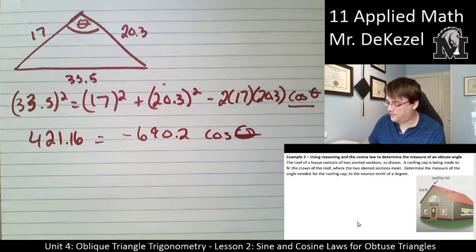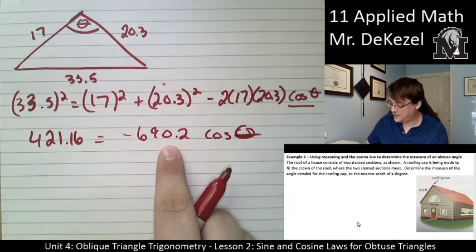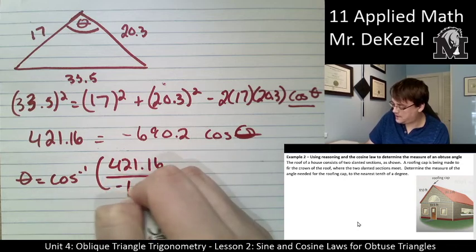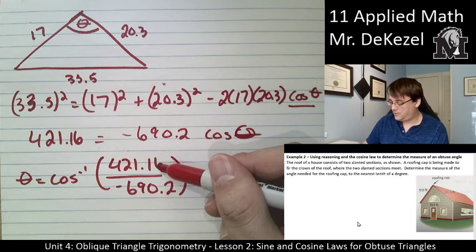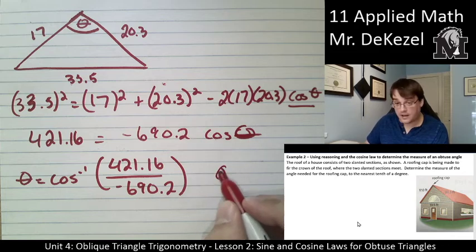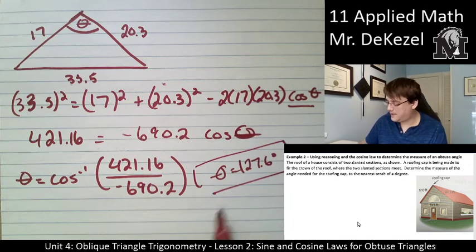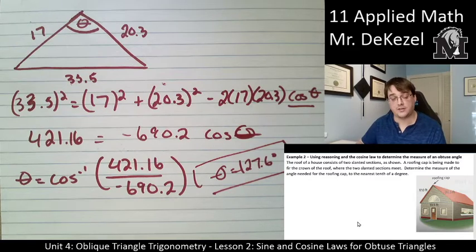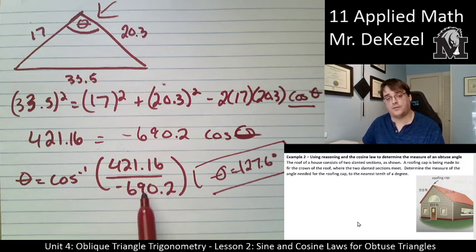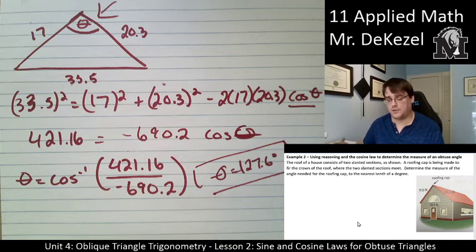And we also have the cosine of theta over here. Now to get cosine of theta all by itself, I'm going to divide both sides by this number and then inverse cosine. So theta is equal to the inverse cosine of 421.16 divided by negative 690.2. If I do these numbers equals and then punch it into my cosine inverse, I get theta to equal 127.6 degrees. And that makes sense. It is larger than 90 degrees for obtuse angle. That makes sense to me. I also know that a negative value here for a cosine will get me a value greater than 90 as an angle. So that makes sense. Everything looks great there.